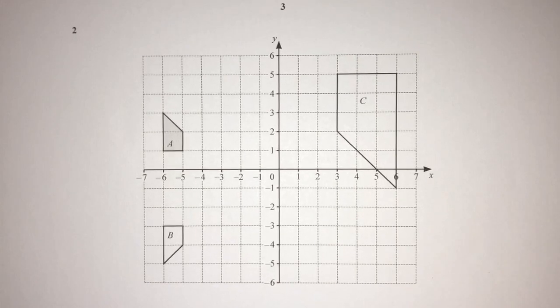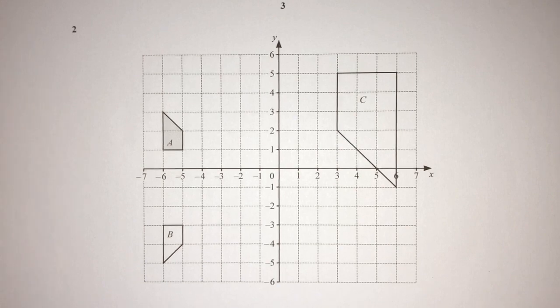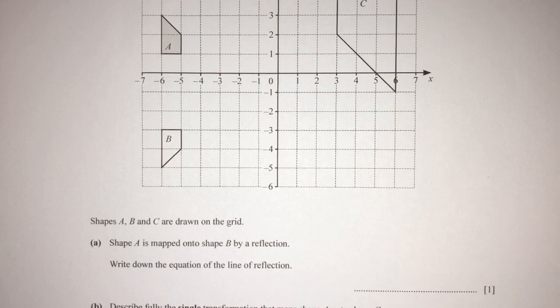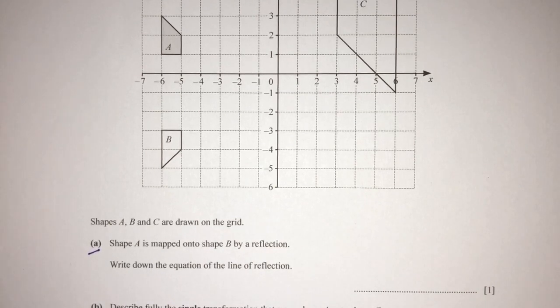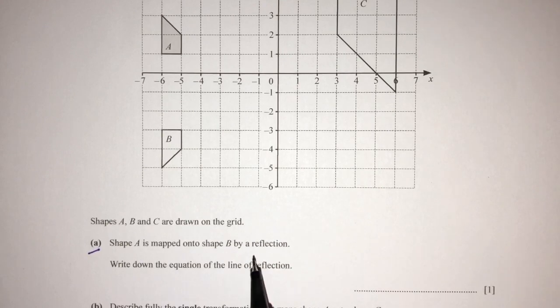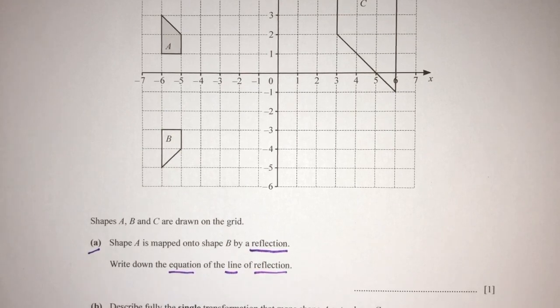Now, let's move on to the second question in this series of transformation questions. Here we have a diagram with shapes A, B, and C. Let's move on to the question itself. Part one says shape A is mapped onto B by a reflection. It's given that it is a reflection. Now, we have to write down the equation of the line of reflection.